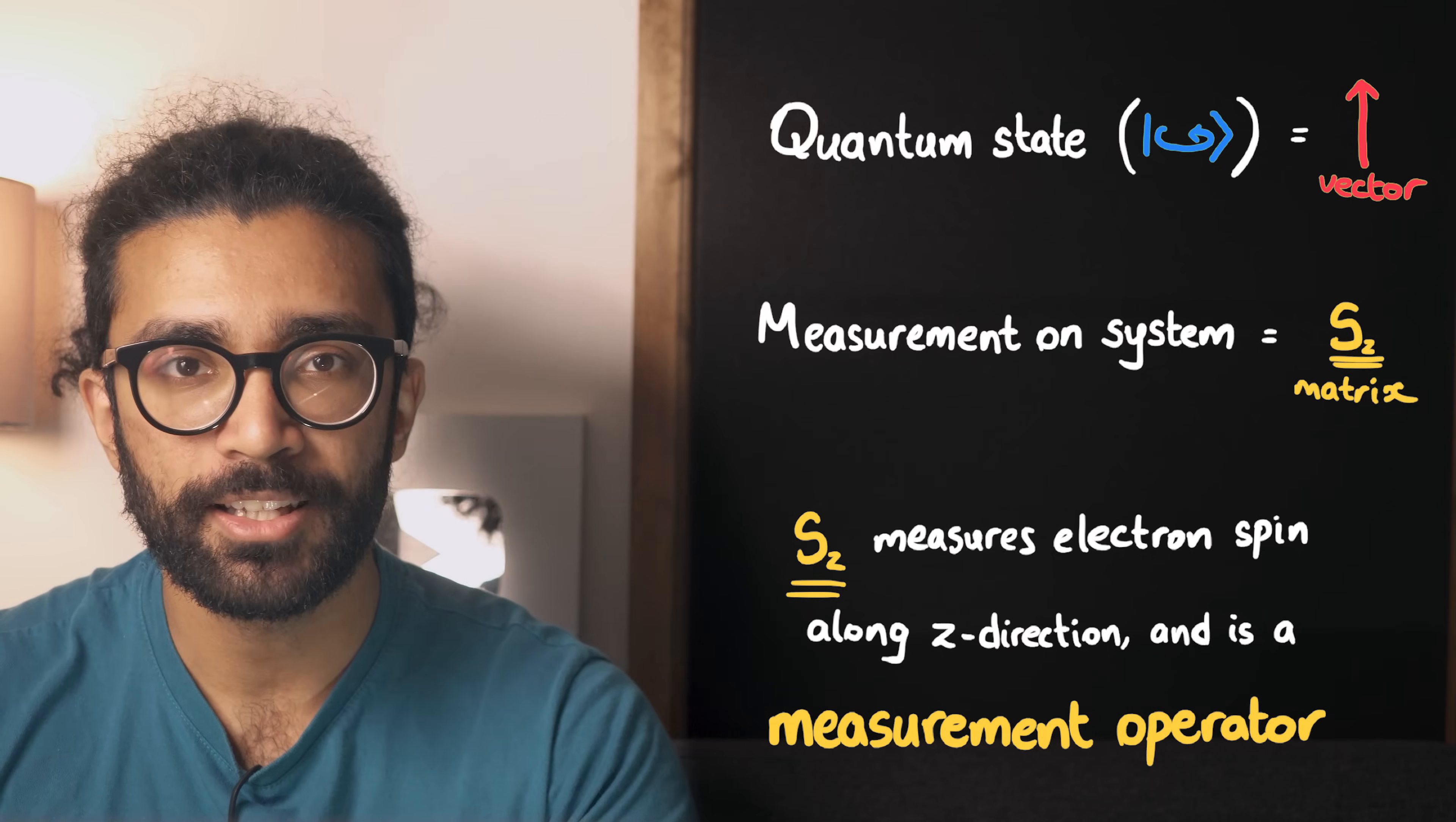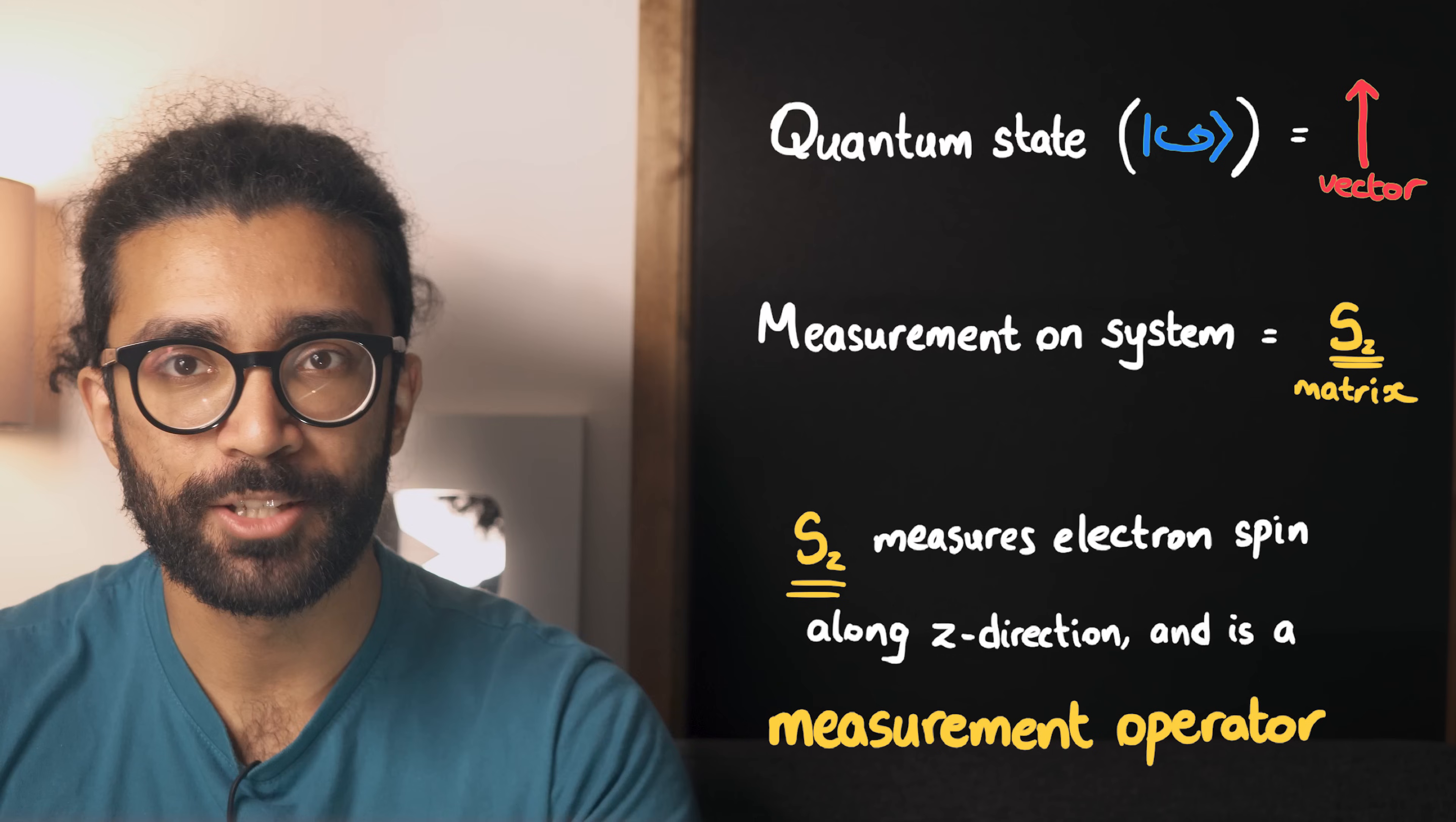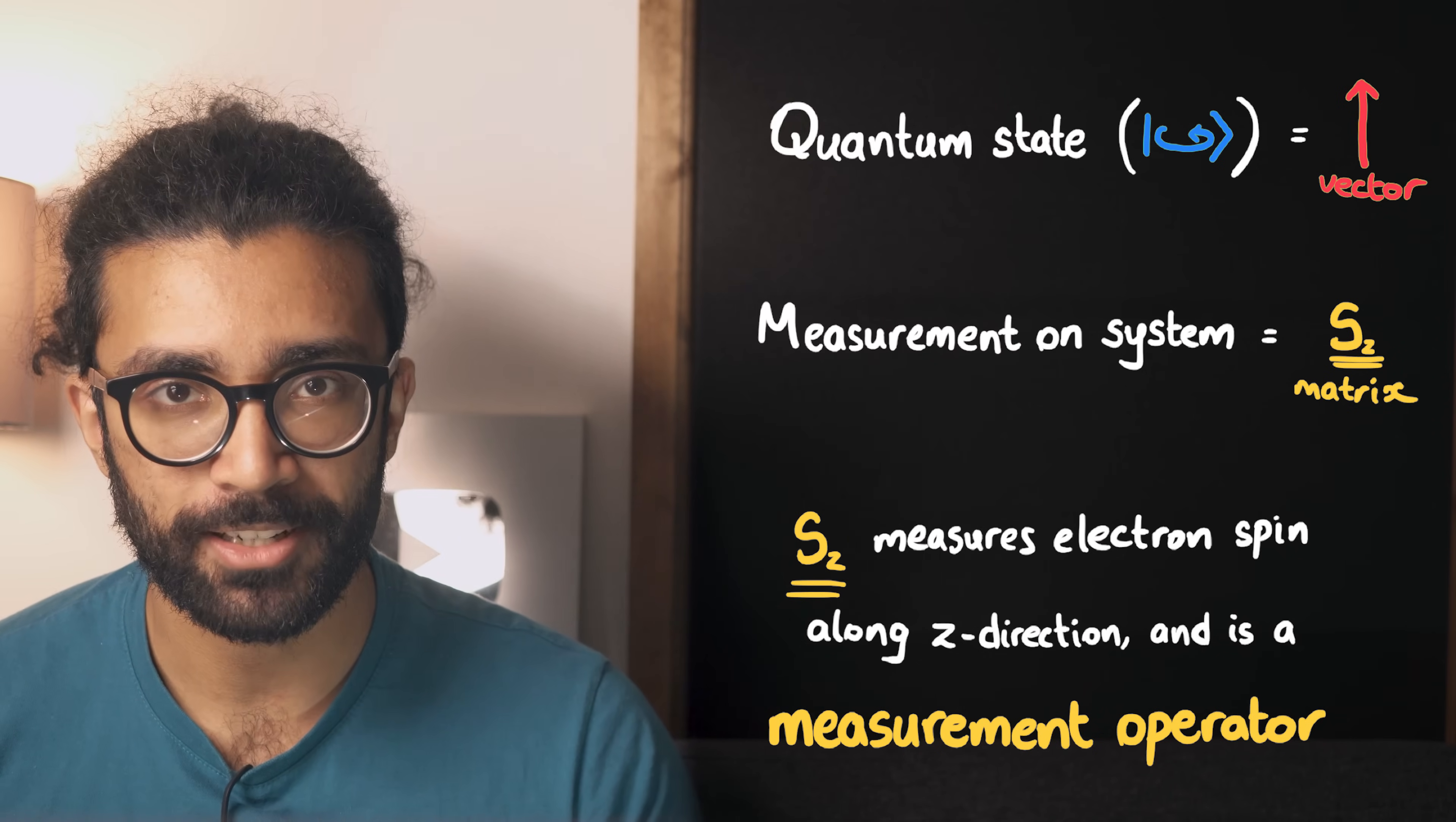A more correct way to say this is that the act of taking a measurement, such as trying to find the spin of our electron, can be mathematically treated like a matrix.